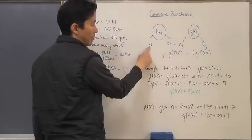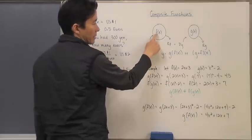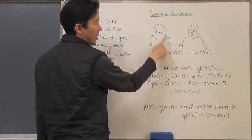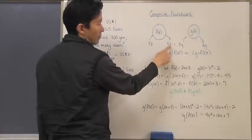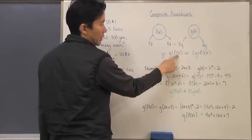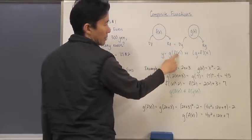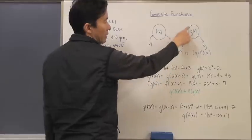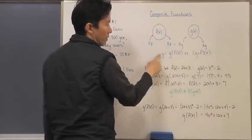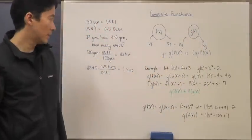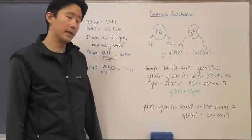I put in an actual value into my domain value for F. So the X value would go into F first, F will then come up with a particular value for its range. That range value then becomes the domain value for G, put it into G, and come up with a final range value for G.